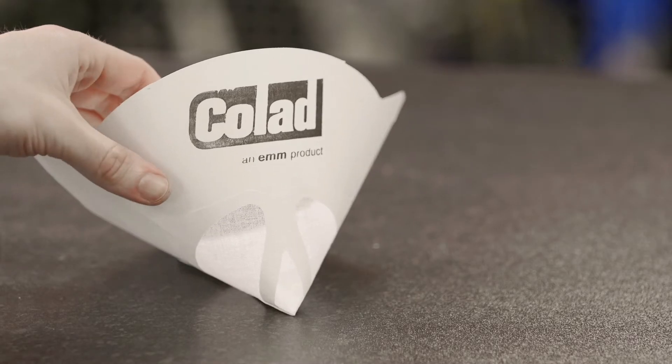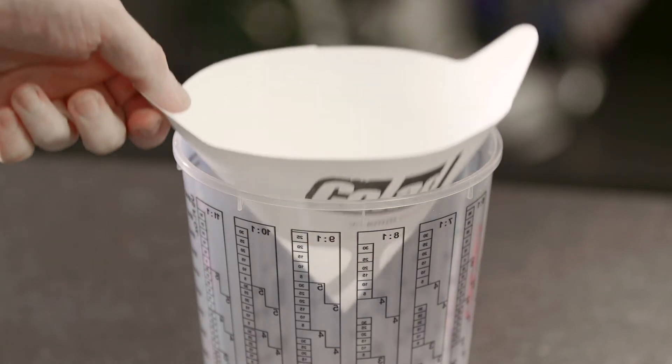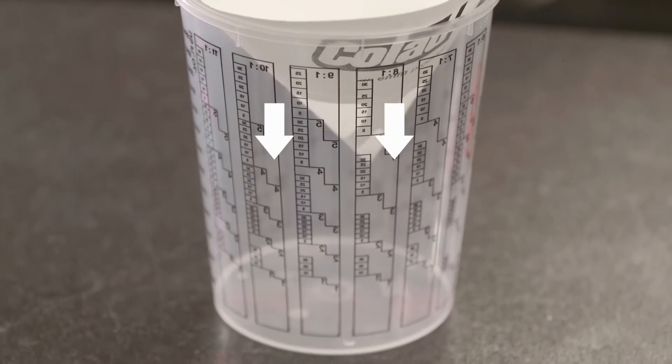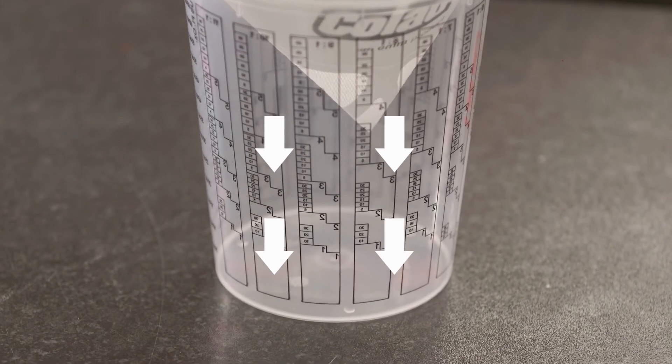To use these paint strainers, you place the filter in the top of the gravity or suction spray pot and then you pour your mixed paint through the strainer into the pot.